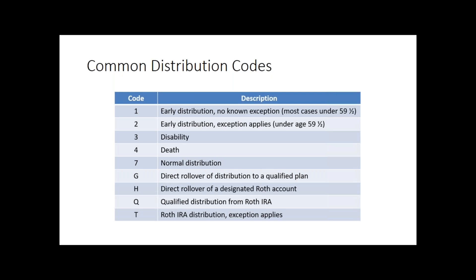If you do get a 1099-R, you want to go ahead and enter that information. A couple of other codes are for Roth accounts — there's a code for a direct rollover of a Roth, similar to Code G but just for a Roth account. There could be a qualified distribution from a Roth — that would be Code Q — or Code T, which is a Roth IRA distribution where an exception applies. These are the codes that are currently within scope for VITA. If you get a 1099-R with a different code, we want to make sure the return is still within scope and whether there's an area we can address.